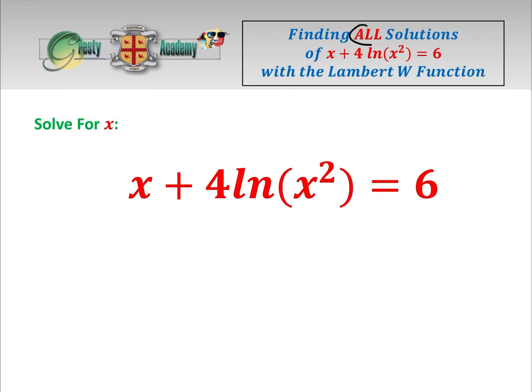Today we're going to be looking at finding all solutions of this equation here, x plus 4 log x squared, which makes things slightly more complicated, equals 6. We're going to do it by two methods. The first method gets all three solutions, and the second method, if you're not careful, misses two of the three solutions.